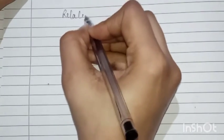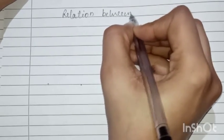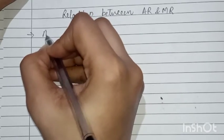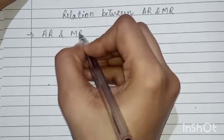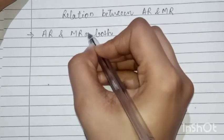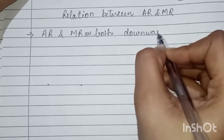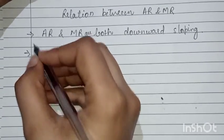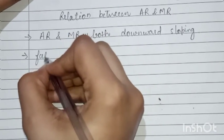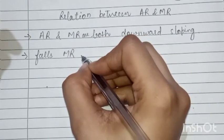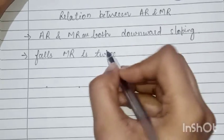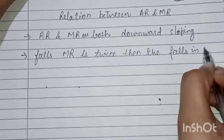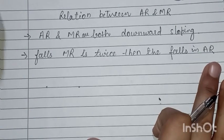Now the relationship between AR and MR. Both AR and MR curves are downward sloping. The rate of fall in MR is twice the rate of fall in AR — MR falls faster than AR.